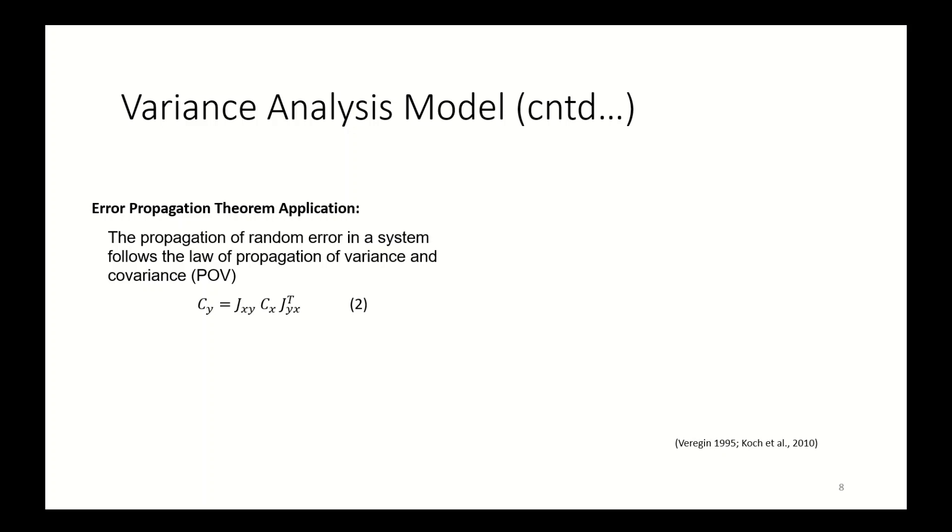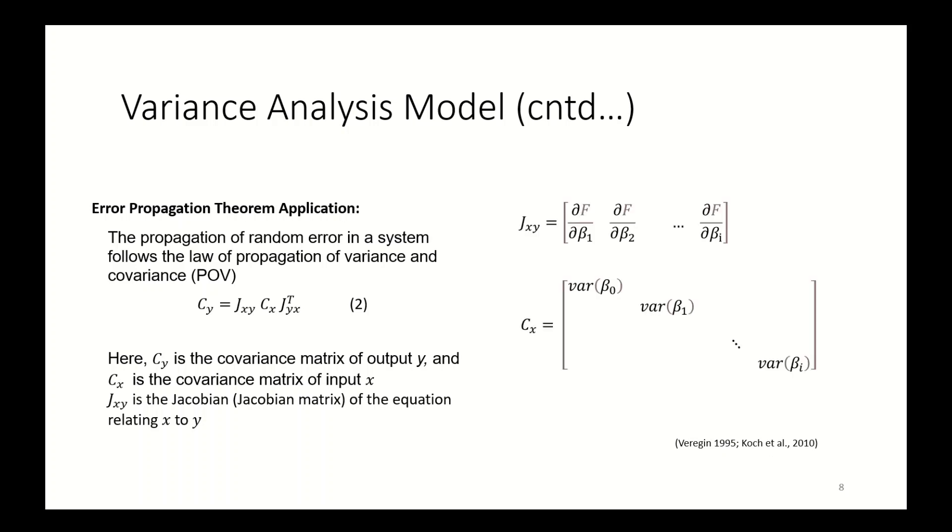ZXY is the Jacobian of the equation relating X to Y. Here, the equations to define Jacobian and covariance matrices are given over here.